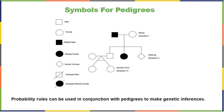In the last video, we talked about how you can use probability to look at the outcome of potential genetic crosses. The video prior, we talked about Punnett squares. Now we're going to talk about pedigrees, which is another way that you can look at the outcome of a cross.